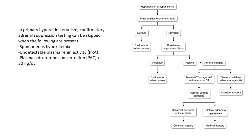In primary hyperaldosteronism, aldosterone suppression testing can be skipped if there is spontaneous hypokalemia, undetectable plasma renin, or very high aldosterone activity.